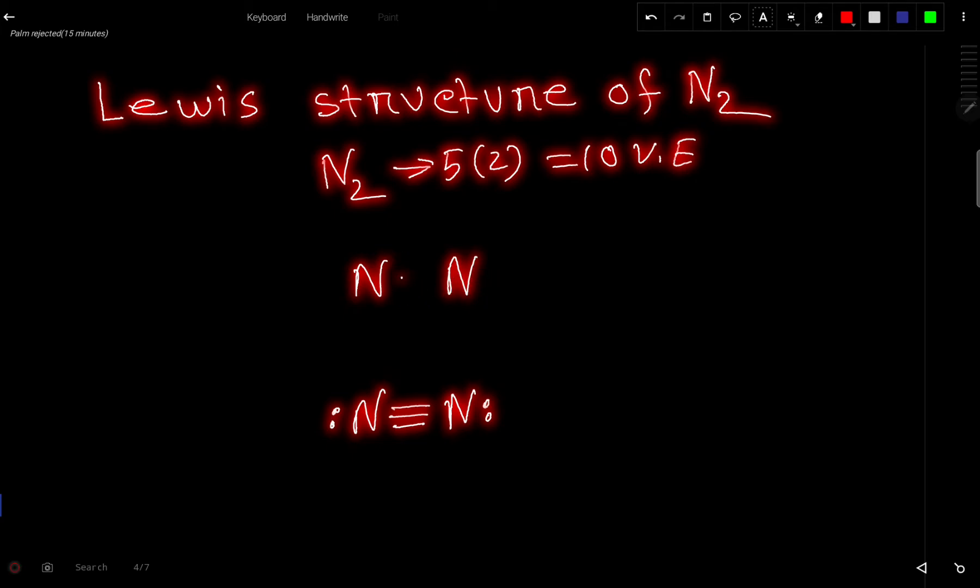So let us connect. To connect these 2 atoms, we need 2 electrons or 1 bond. So after connecting, we have 8 valence electrons left.